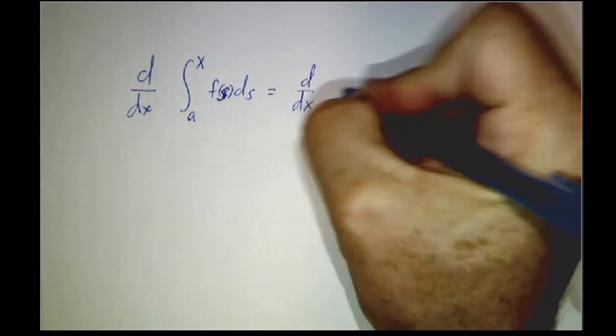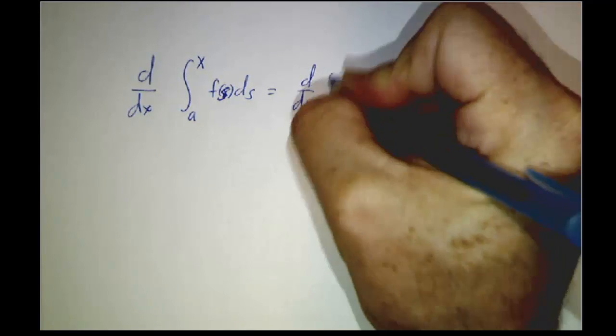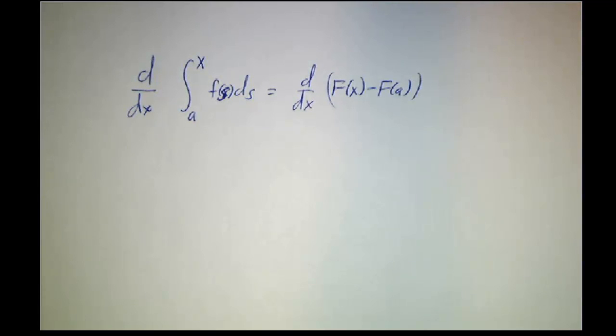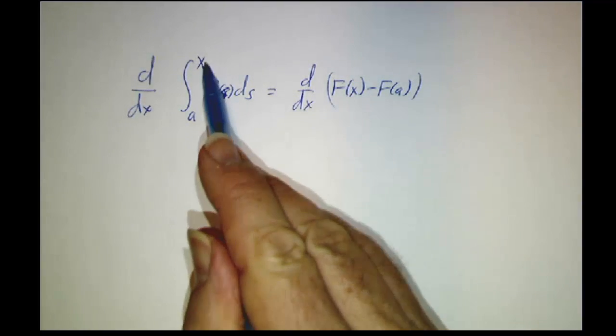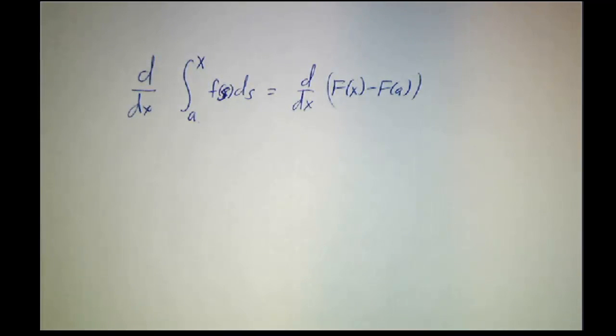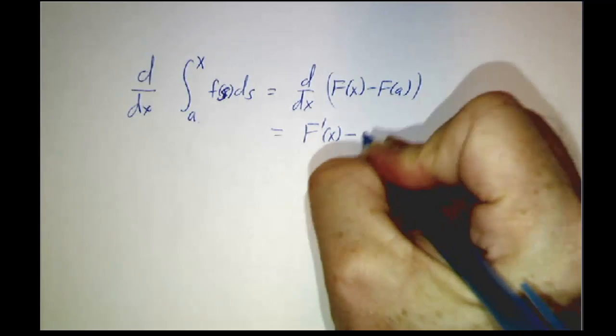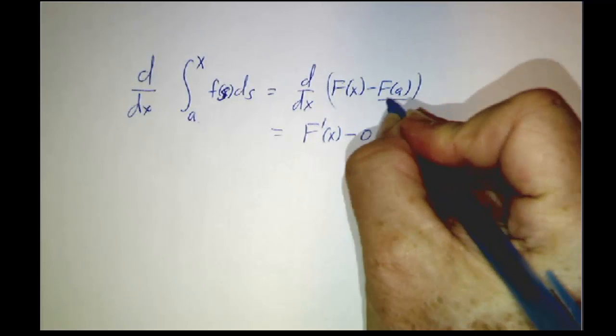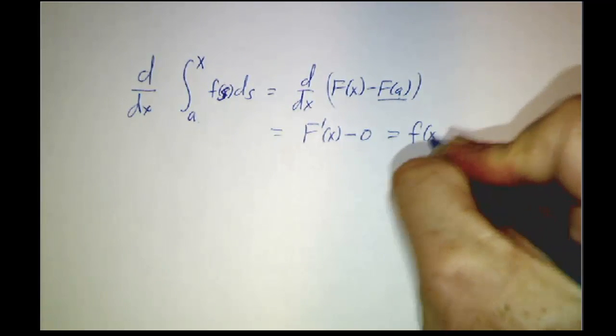well that's the derivative of big F of x minus big F of a. The second fundamental theorem of calculus says you find an antiderivative and you plug in at the endpoints, and that's how you do an integral from one spot to another spot. And that's f prime of x minus 0, because this is a constant. It doesn't depend on x, so its derivative is 0, and that's little f of x.